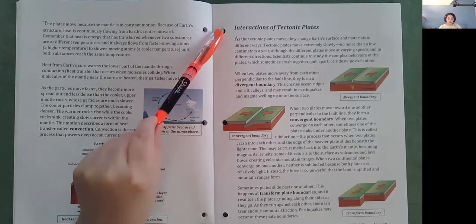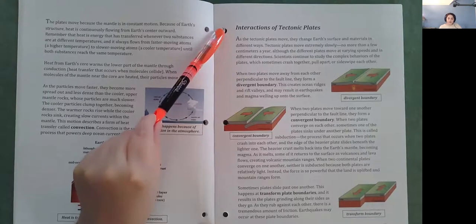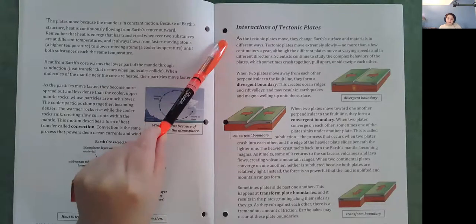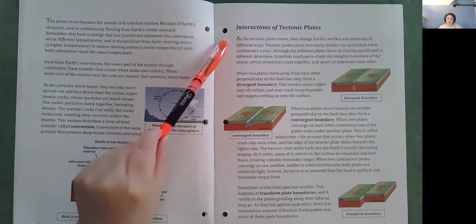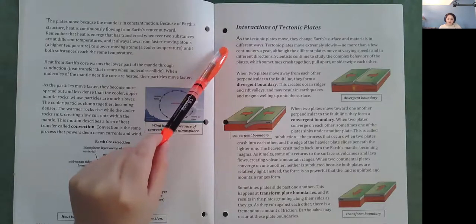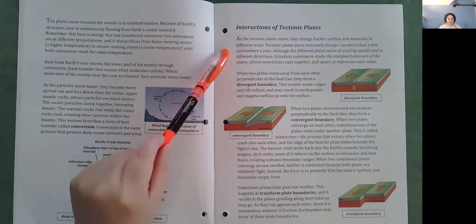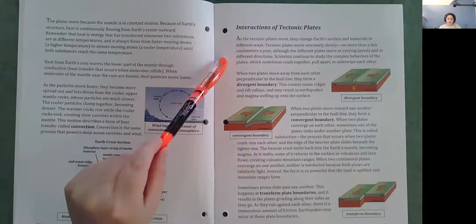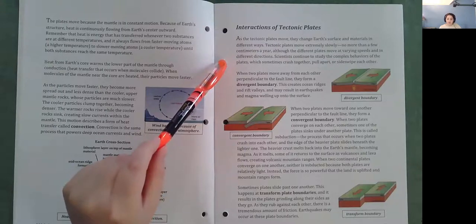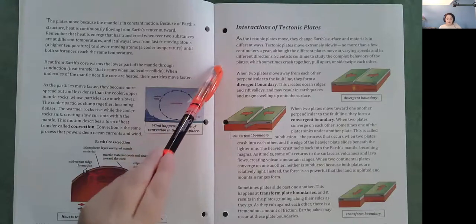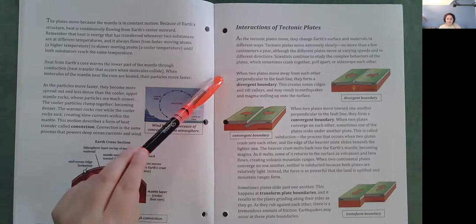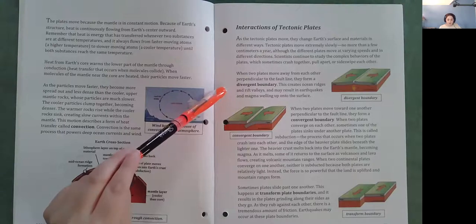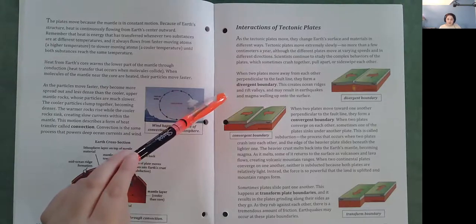Interactions of tectonic plates. As the tectonic plates move, they change Earth's surface and materials in different ways. Tectonic plates move extremely slowly, no more than a few centimeters a year, although the different plates move at varying speeds and in different directions. Scientists continue to study the complex behaviors of the plates, which sometimes crash together, pull apart, or side swipe each other. When two plates move away from each other, perpendicular to the fault line, they form a divergent boundary. This creates ocean ridges and rift valleys and may result in earthquakes and magma swelling up into the surface.